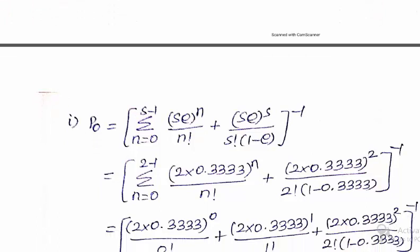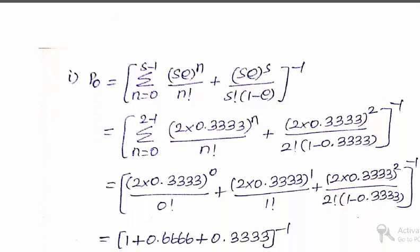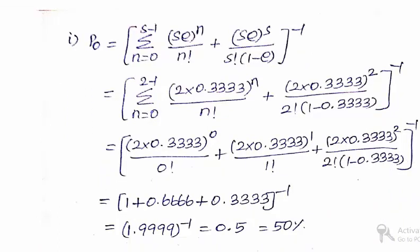This is the formula for finding out the value of P0, direct formula substitution. Here there are two terms. In the first term, there is a summation part.